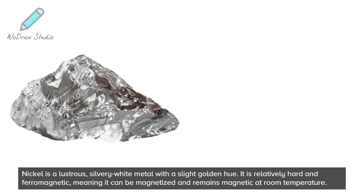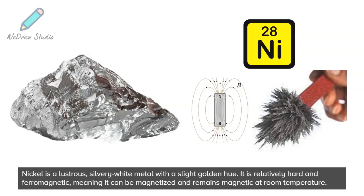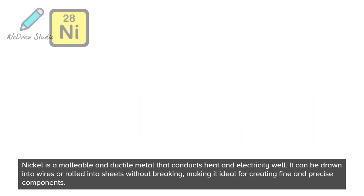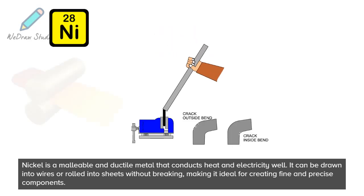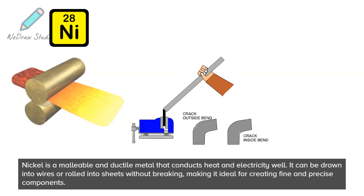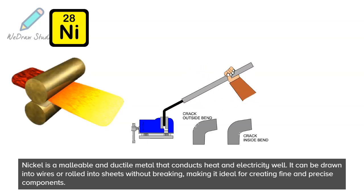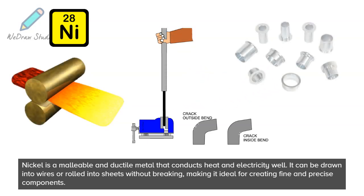Nickel is a lustrous, silvery-white metal with a slight golden hue. It is relatively hard and ferromagnetic, meaning it can be magnetized and remains magnetic at room temperature. Nickel is a malleable and ductile metal that conducts heat and electricity well. It can be drawn into wires or rolled into sheets without breaking, making it ideal for creating fine and precise components.